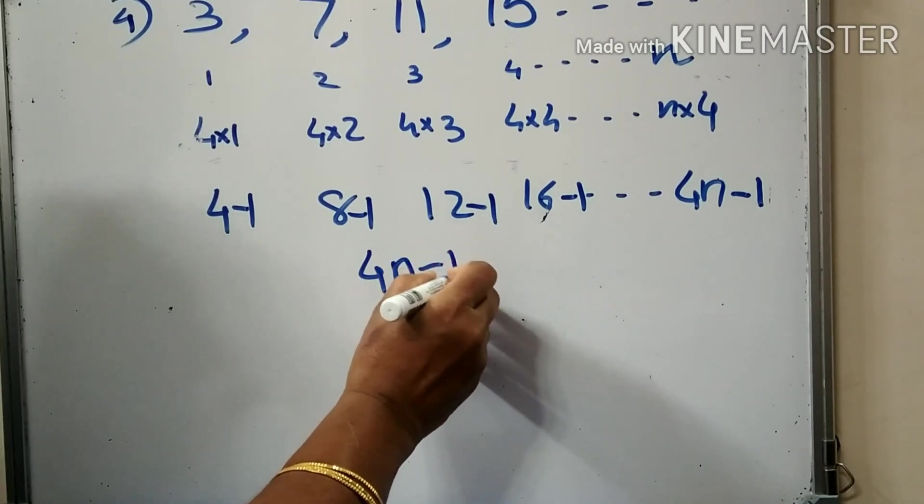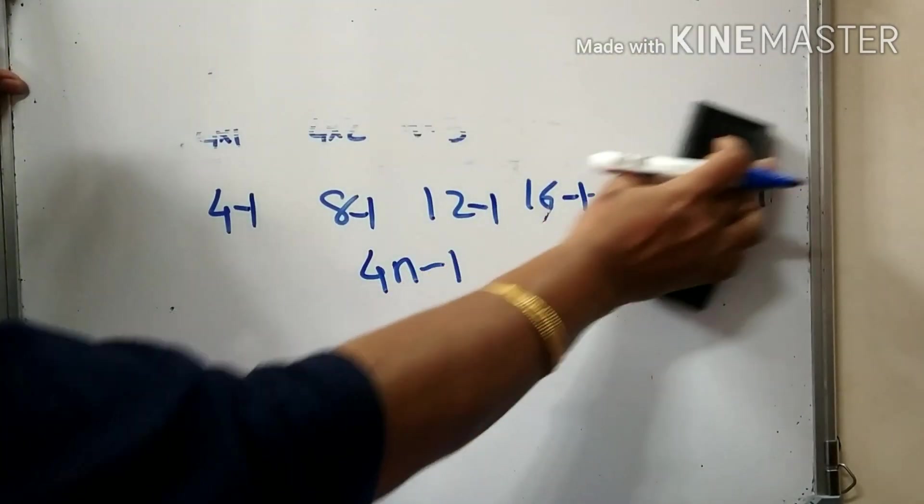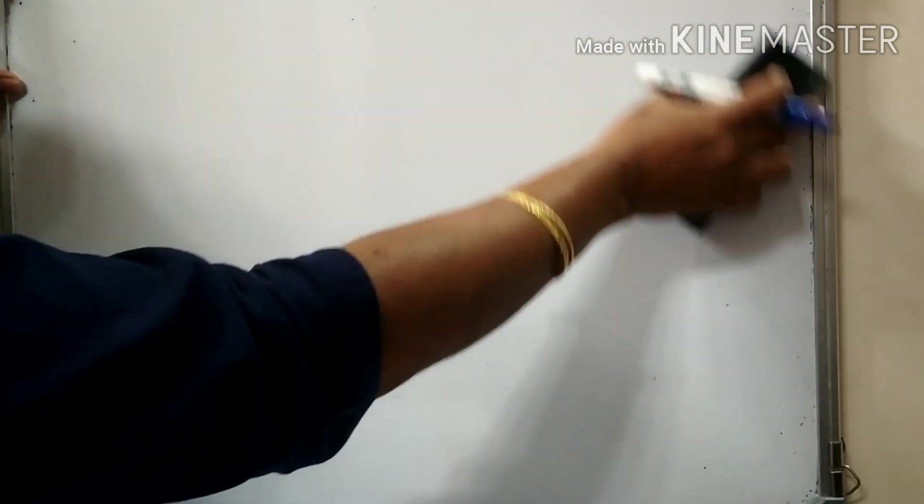5, 5, 5 minus 1. This is the example and method. We will do questions in our text. Write the algebraic expression — page number 15. Write the algebraic expression for each of the sequences below.